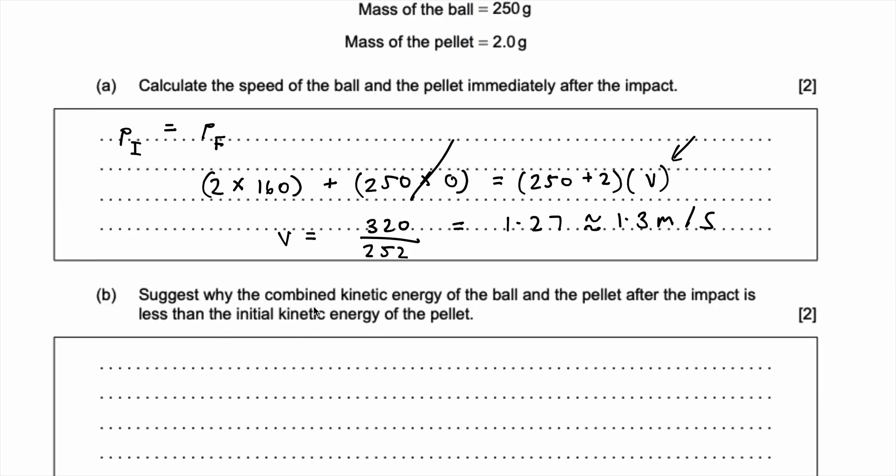Okay part b. Suggest why the combined kinetic energy of the ball and the pellet after the impact is less than the initial kinetic energy of just the pellet. So this is what you need to understand.